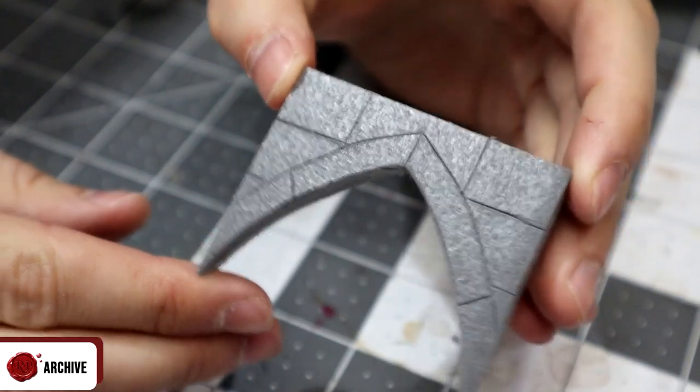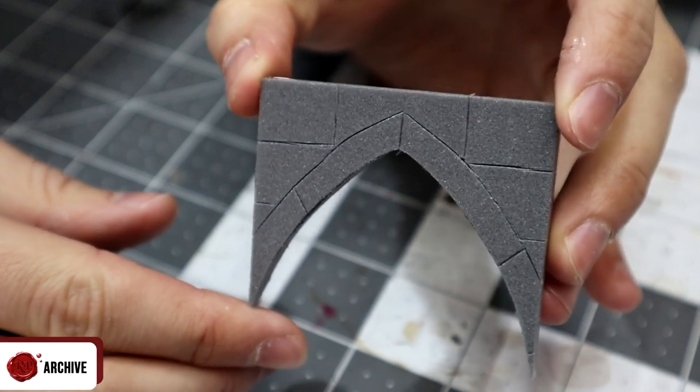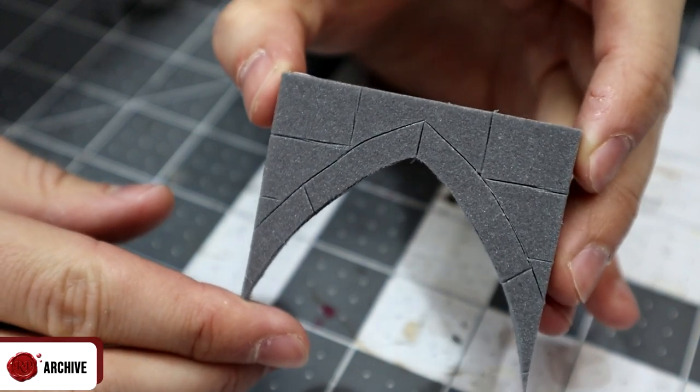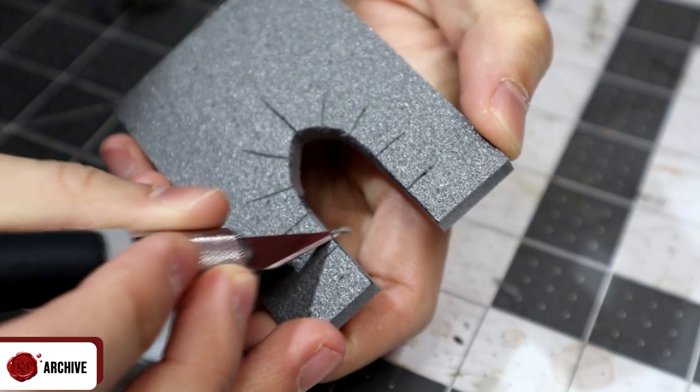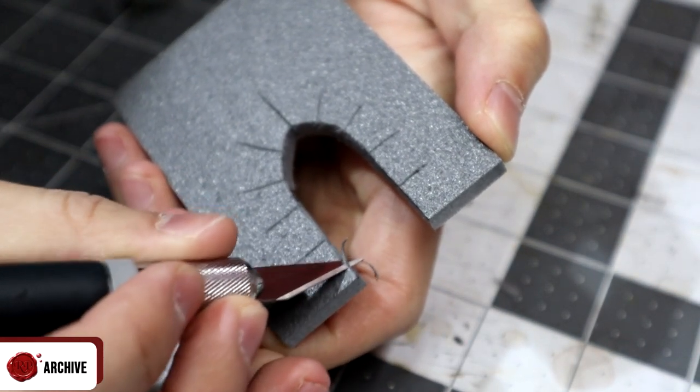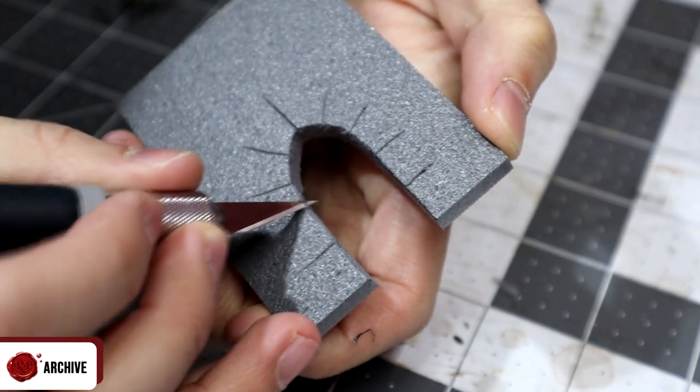Then we can add some brickwork to the front. I ended up doing mine similarly to the rest of the wall to add some consistency between pieces and make it feel like they were part of the same structure. Once I had my bricks I cut some thin strips and some little weathered chunks depending on how damaged you want them to look.